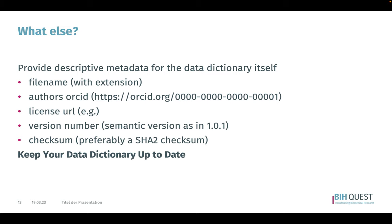You should also provide descriptive metadata for the data dictionary itself in a separate text file. Include, for instance, the file name with the extension, the authors involved in generating the data dictionary along with their ORCID, the license that is used, and the version number if you have several versions. If applicable, you can also use a checksum of the file to make sure that when it's copied, it is complete.